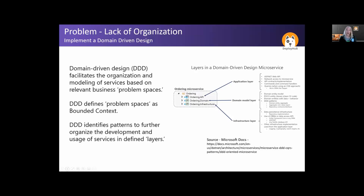When you start layering a domain-driven design in microservices, you often break it into problem spaces — or I like to call them solution spaces — like an application layer, a domain model layer, and an infrastructure layer. If you're taking the time to build this out, what you want to do is manage those microservices based on that DDD, and that will solve your organizational structure problems. Think about DDD as identifying patterns to further organize the development and usage of your defined layers.